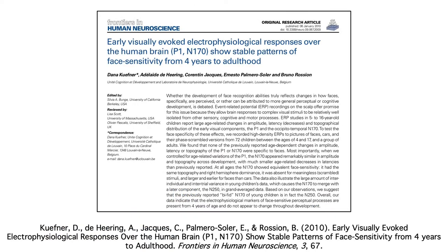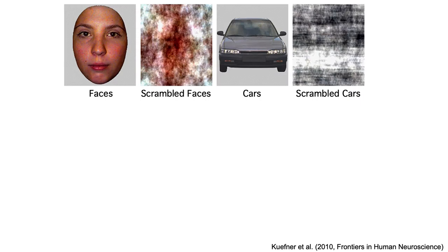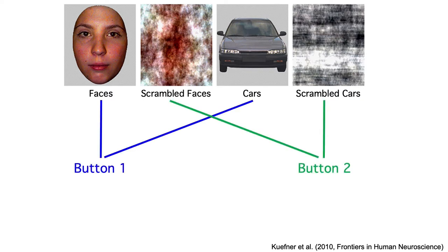To distinguish between a developmental change in face-specific processing and a developmental change in other non-specific processes, Kufner et al. ran the experiment shown here. They showed subjects a randomized sequence of faces, cars, scrambled faces, and scrambled cars. To keep the subjects alert and attentive, they had the subjects press one button for the faces and the cars, and another button for the scrambled faces and the scrambled cars. It wasn't an oddball paradigm — all four stimulus categories occurred equally often.